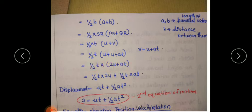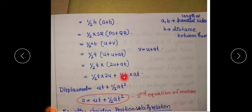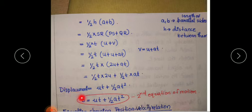Removing the bracket: ½T × 2U plus ½T × AT. The 2 and 2 cancel, leaving UT, plus ½AT². So we get displacement equal to UT + ½AT².